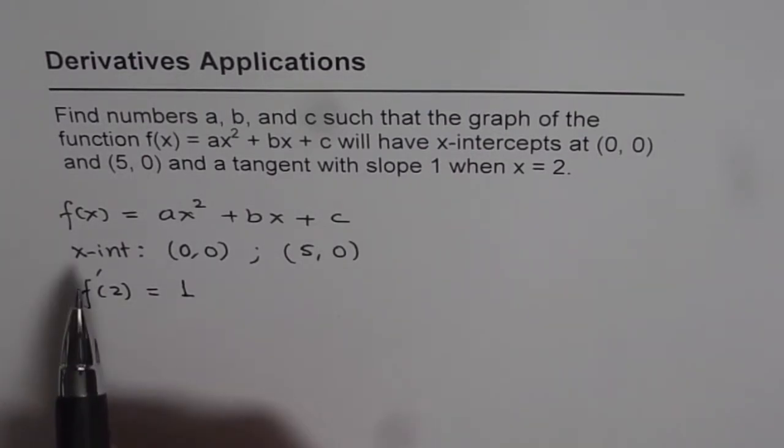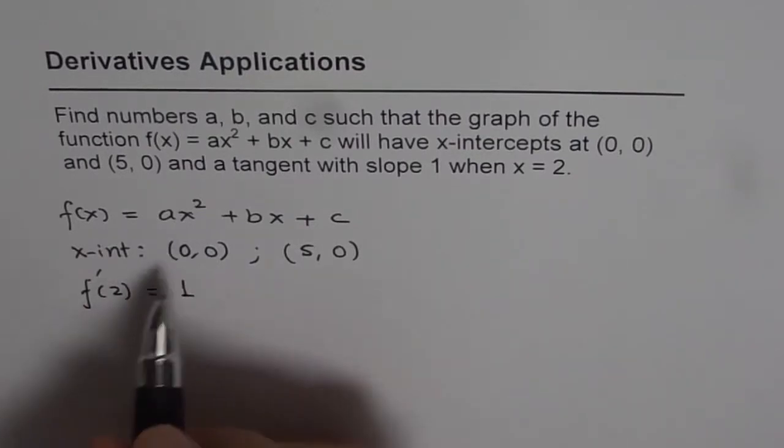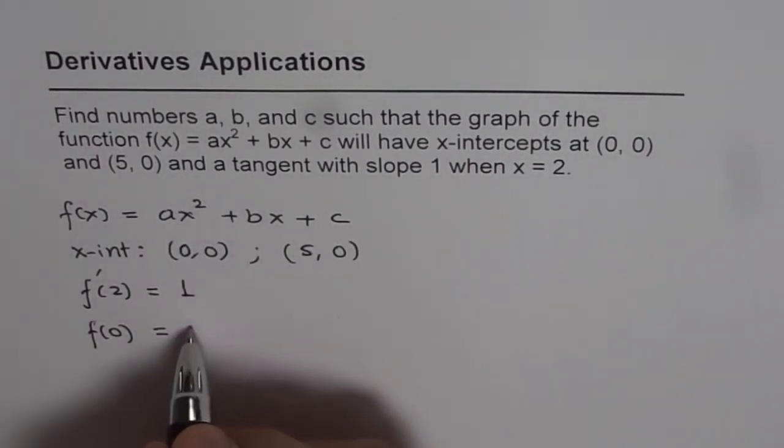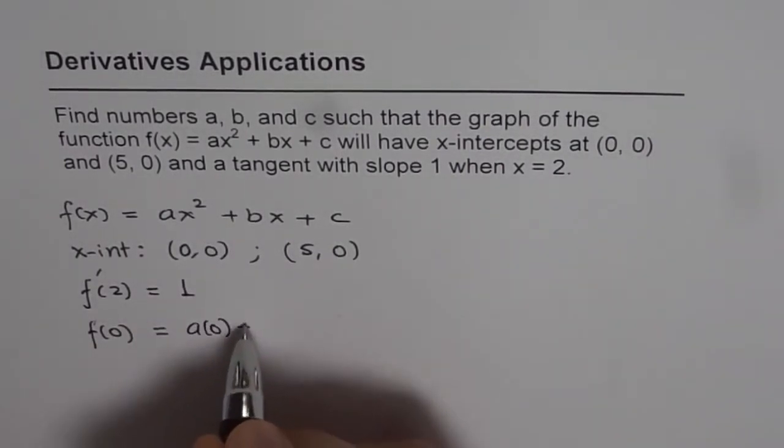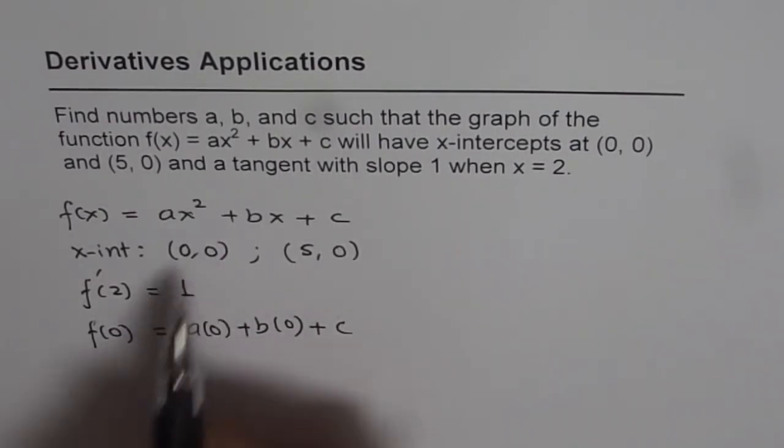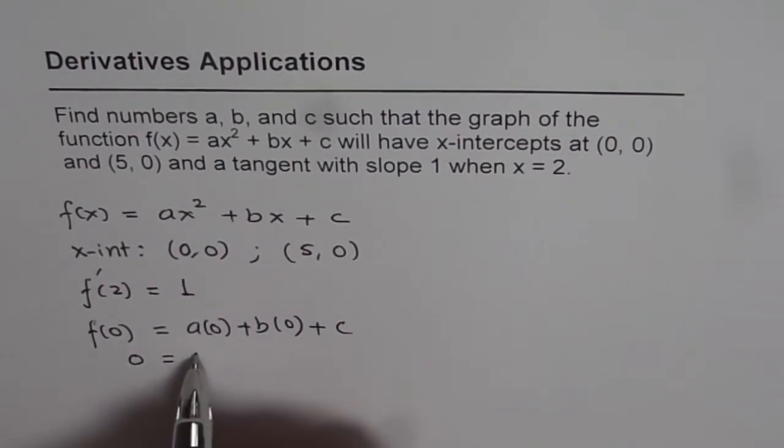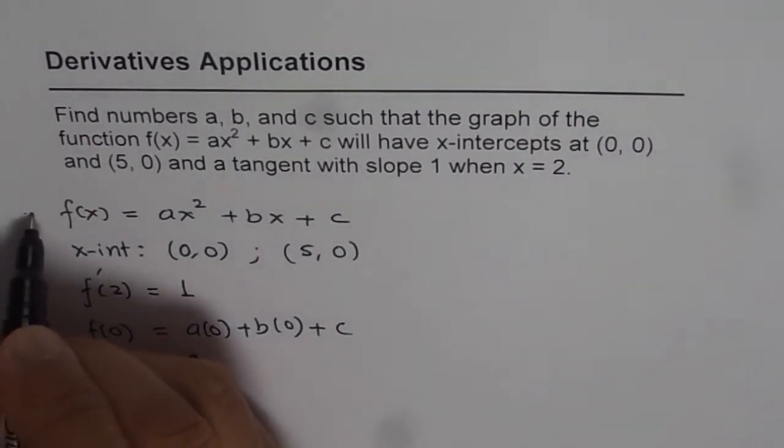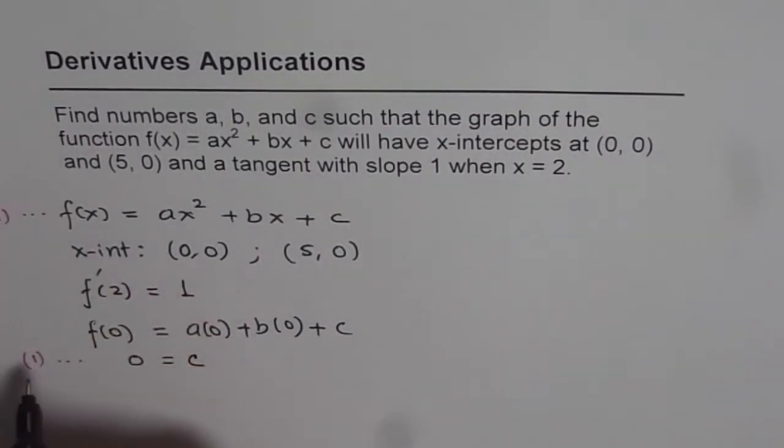So the conditions are x-intercept at (0,0) and the second x-intercept is at (5,0). These are two conditions and the third one is tangent with slope of 1 when x = 2. That means the derivative of the function f'(x) at x = 2 is equal to 1. Now from these three conditions we should get three equations. Using x-intercept at (0,0) we get f(0) equals, substituting 0 in the equation, we get a times 0 plus b times 0 plus c.